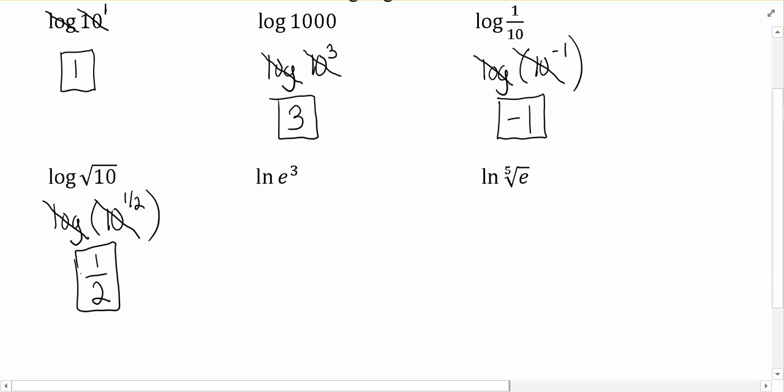When it comes to natural log, remember that natural log undoes e to a power. So this natural log undoes e to the power of 3, leaving just the 3.